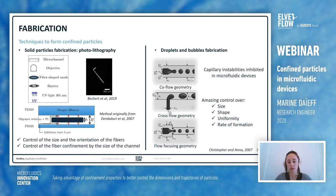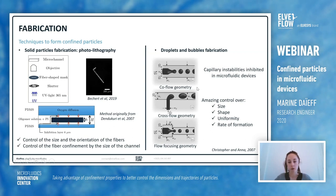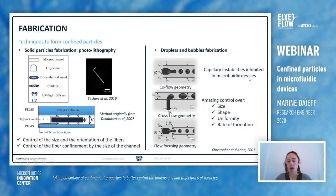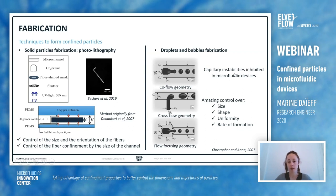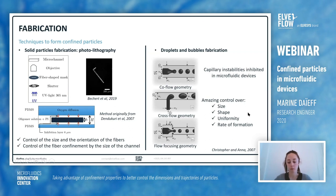For droplets and bubbles fabrication, it depends mostly on the geometry of the microfluidic device. For example, you can have a co-flow geometry, a cross-flow geometry, and a flow-focusing geometry. In all these geometries, because of the confined geometry, capillary instabilities are inhibited, and as a result you have amazing control over the size, shape, uniformity, and rate of formation.